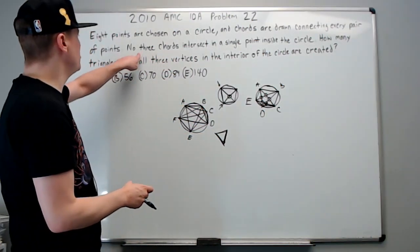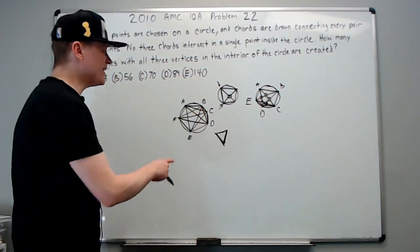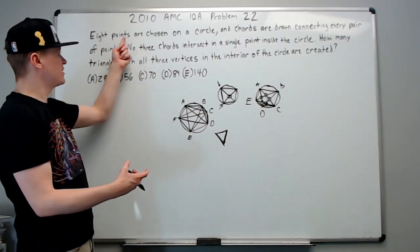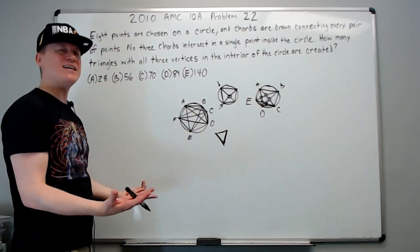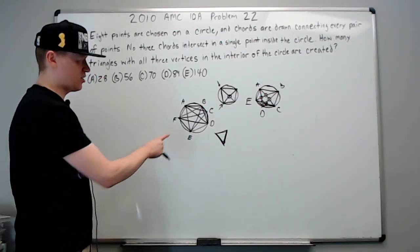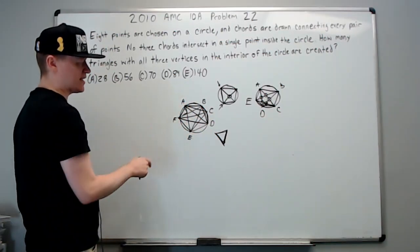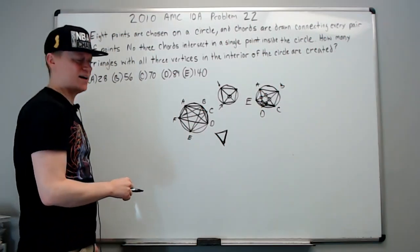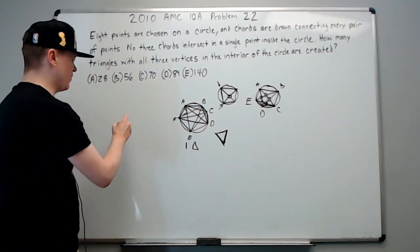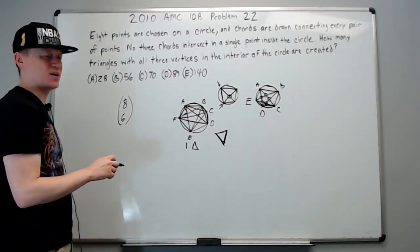Well then, because there's no three chords intersect in a single point, for any selection of six points out of the eight points that it talks about, because there's eight points chosen, any selection of six of those points will create one unique triangle. There are no other triangles on here. Again, if you use one like this, you have to use points A and F, which are not on the interior. So we got one triangle for six points. Then we're just going to do eight choose six, because for any six points, we get one triangle.